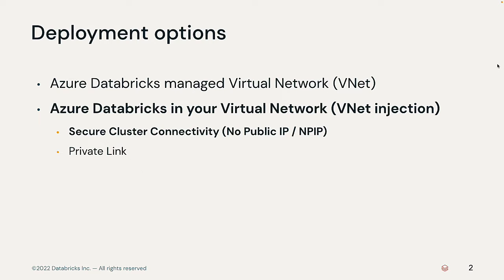Additionally, there are a couple of other options within the customer managed VNet. First is secure cluster connectivity, which allows the VNet to have no open ports and Databricks runtime cluster nodes to have no public IP addresses. I'll show you how to enable this feature. Private link is also available, which we'll cover in another video.